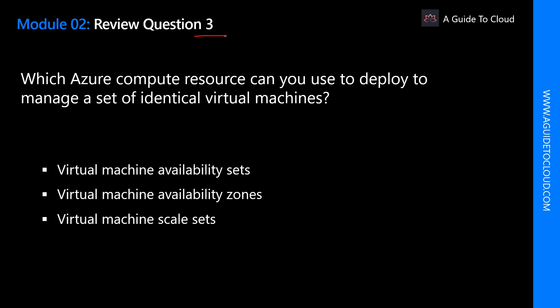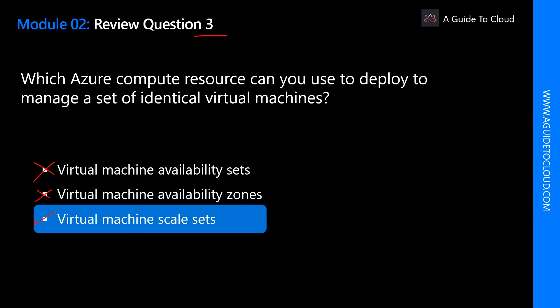Which Azure compute resource can you use to deploy and manage a set of identical virtual machines? We learned about this when discussing Azure compute services — virtual machine, virtual machine scale set, container, and Azure Functions. Is it virtual machine availability set? No — availability set gives high availability via fault tolerance and update domains. Is it availability zone? No — availability zone gives high availability from a data center disaster point of view. The correct answer is virtual machine scale set, which lets you deploy and manage a set of identical virtual machines.